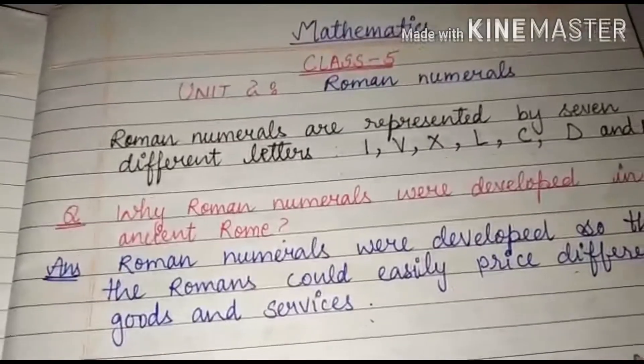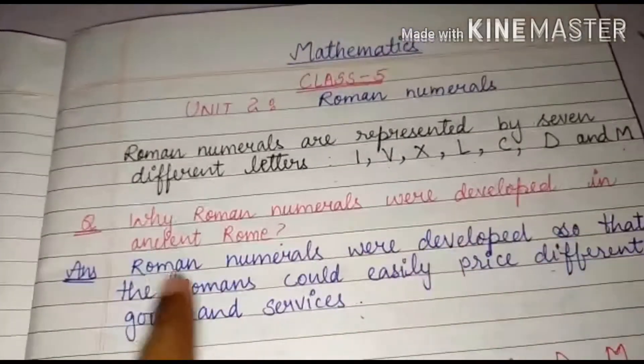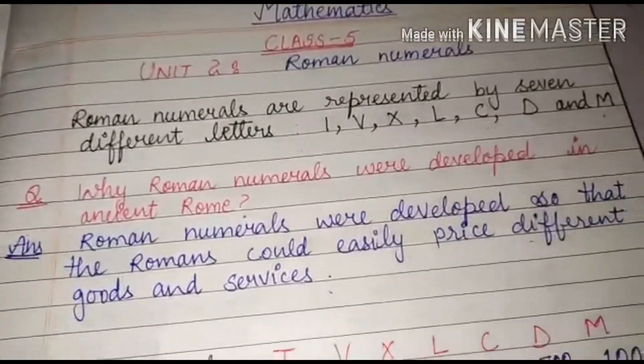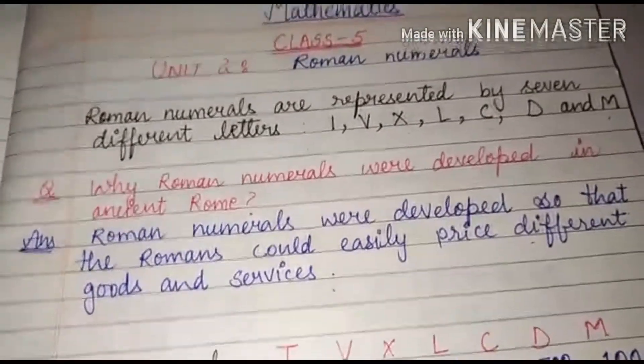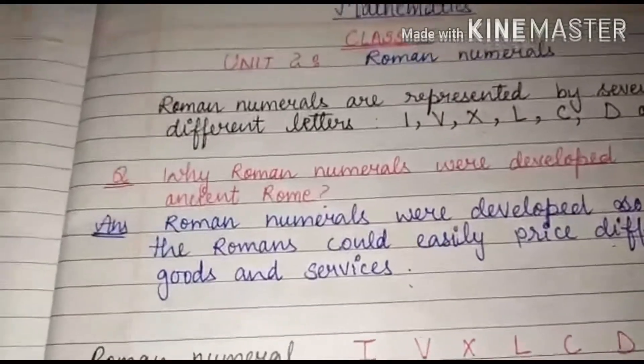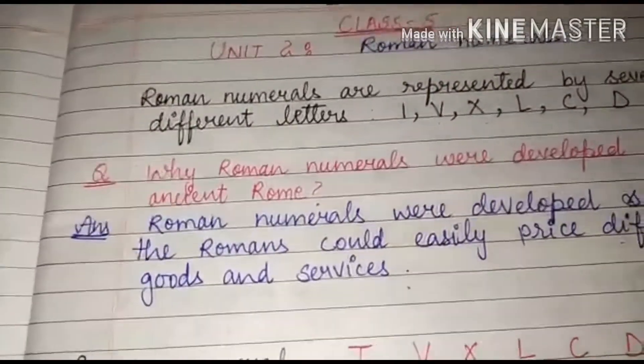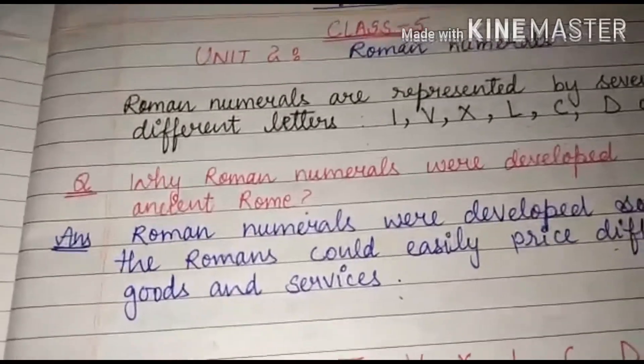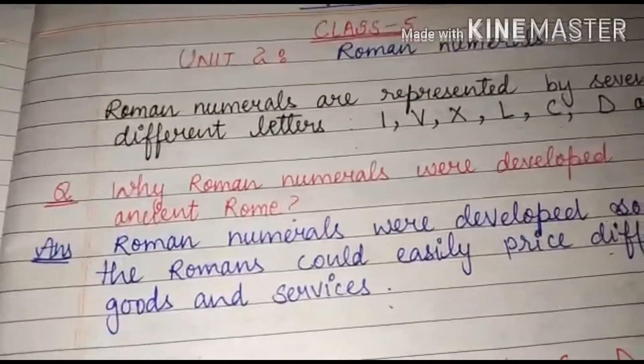Now you must be wondering why Roman numerals were developed in ancient Rome? So the answer is Roman numerals were developed so that the Romans could easily price different goods and services, so that it is easier for them to communicate and have trade with other people, just like we are having with our Hindu-Arabic numerals.